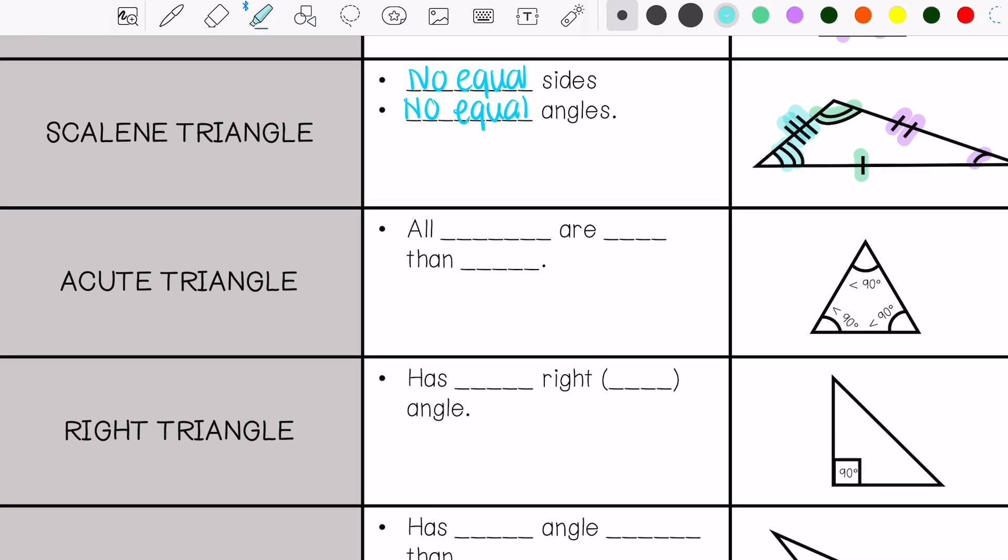Then we have acute triangles. I like to think acute is cute and little, which means all angles are less than 90 degrees.